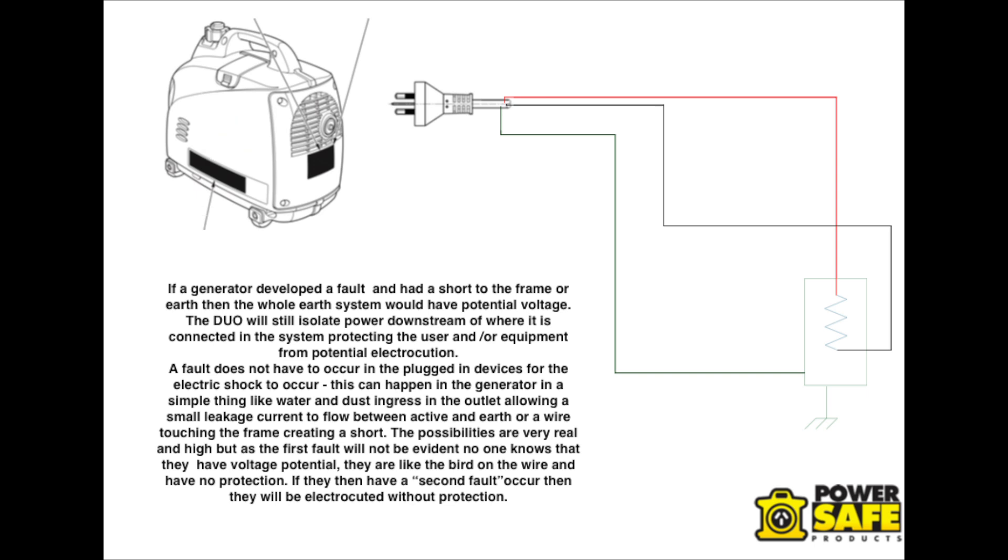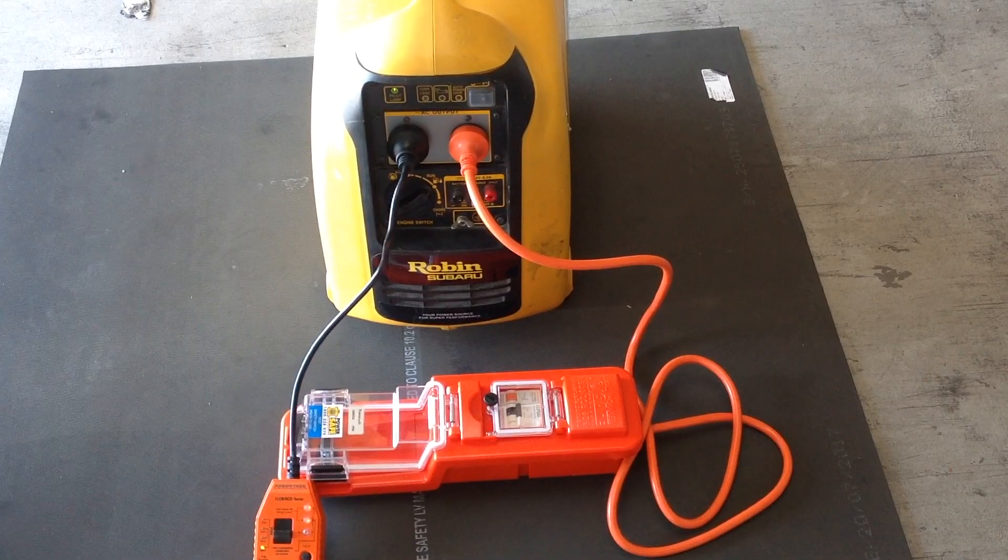The DUO also protects the user by shutting the power off if the fault does not occur in the devices attached to the outlet. In the event that the fault occurs inside the generator or in a different circuit, the DUO will isolate the circuits that are attached to it to protect the user using the appliances downstream of the DUO.